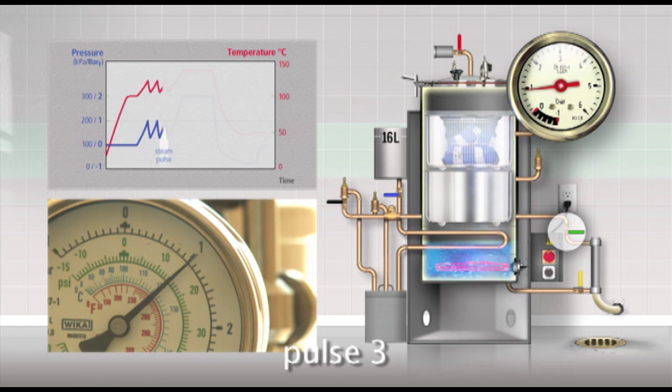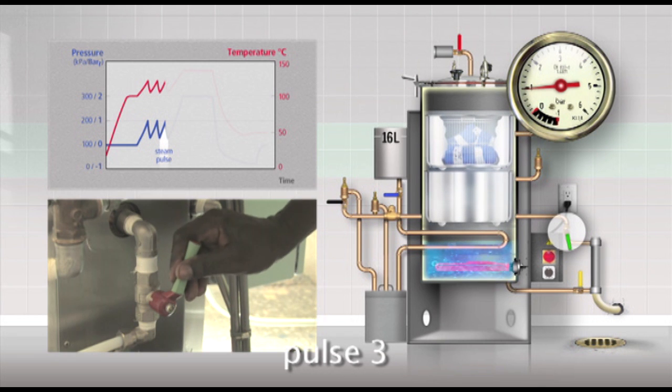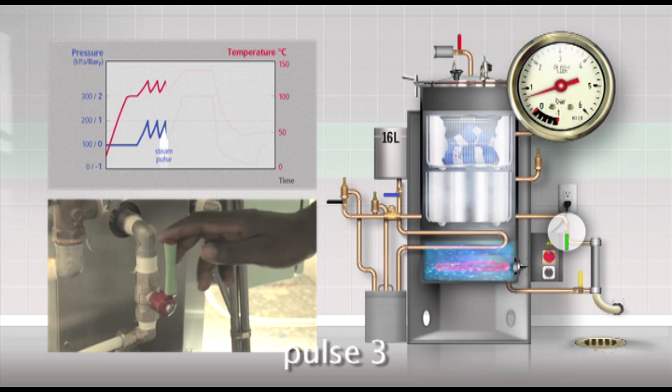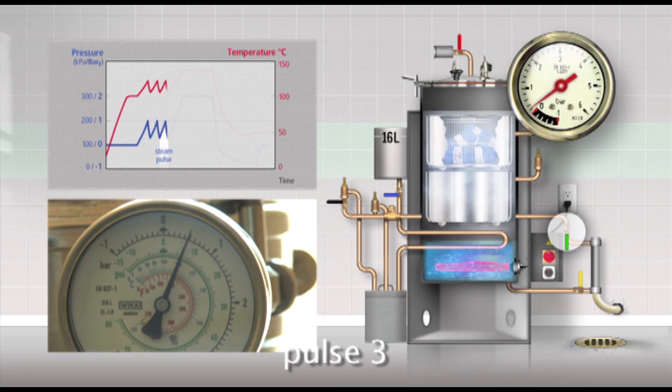Allow the pressure to build up a third time to 1 bar. Then again open the green valve. Let the pressure drop to 0.2 bar and close the valve again.